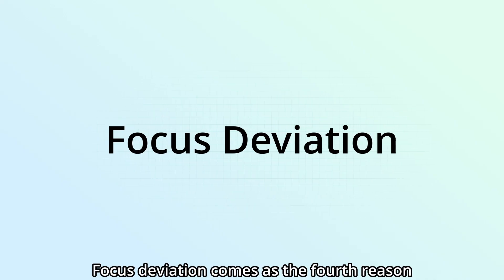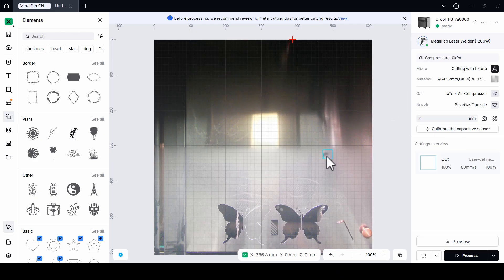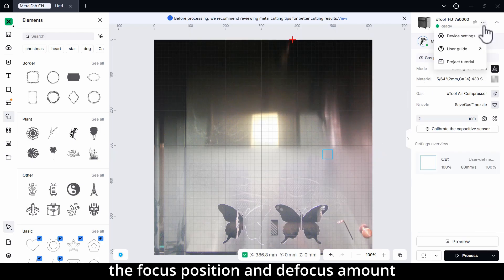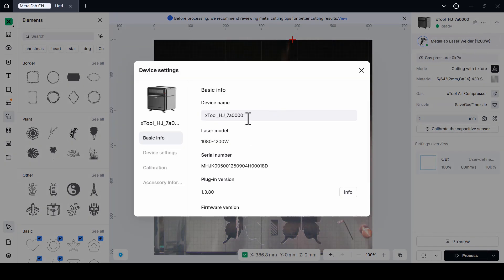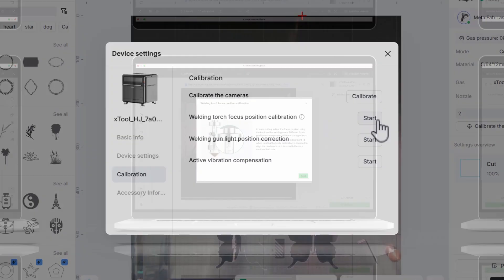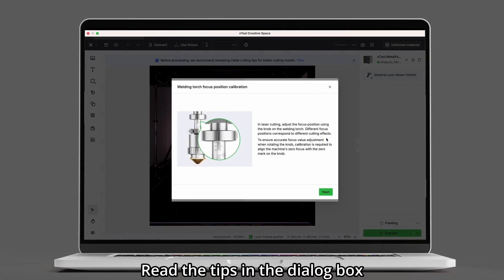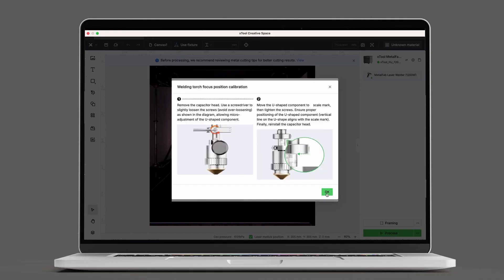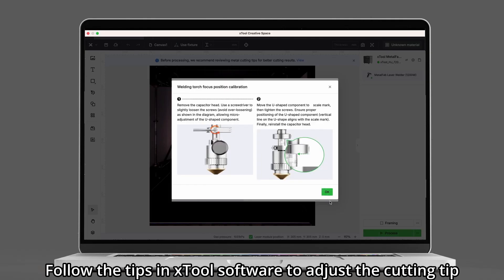Focus deviation comes as the fourth reason. To solve this, we need to adjust the focus position and defocus amount. Read the tips in the dialog box, click next, follow the tips to adjust the cutting tip.